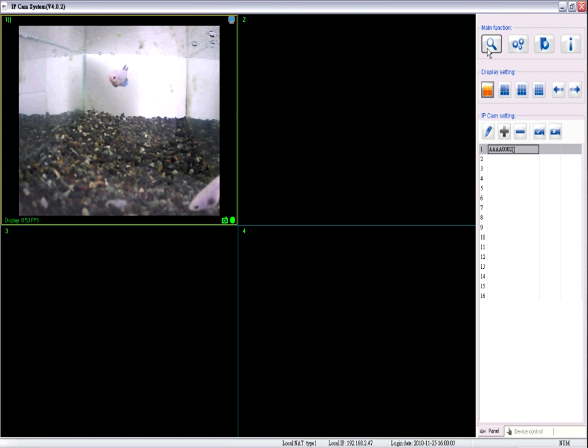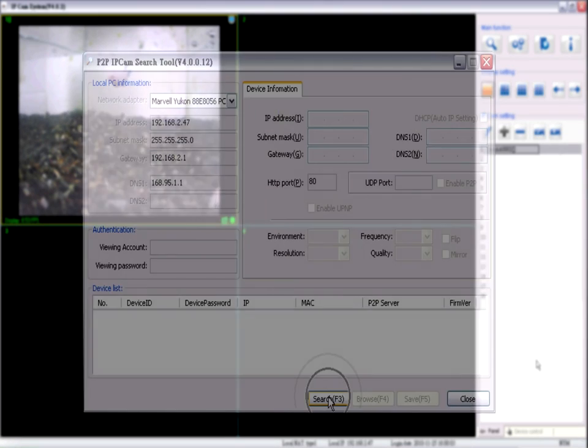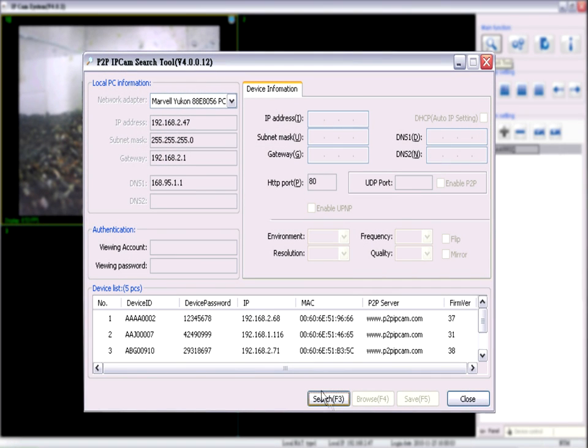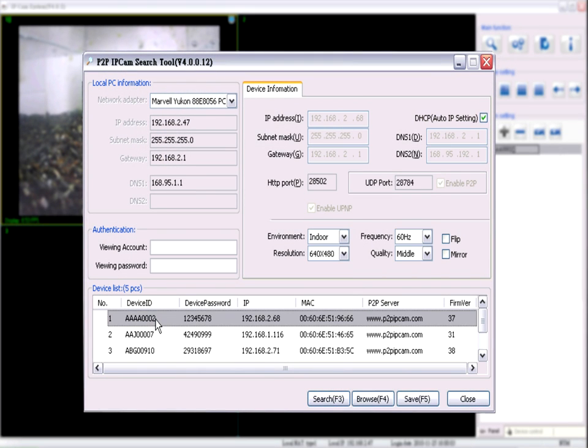Search tool: Search tool is able to find cameras within the local network and also change default detail settings, such as authentication, video format, resolution, video environment, and frequency.